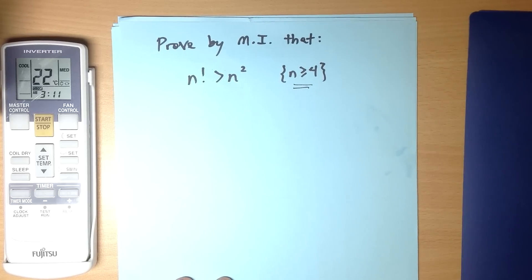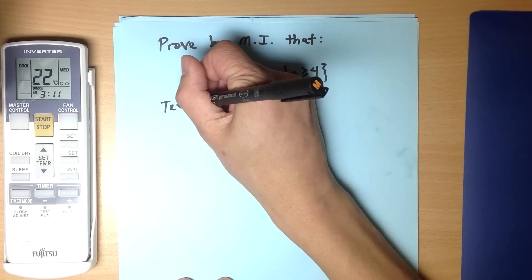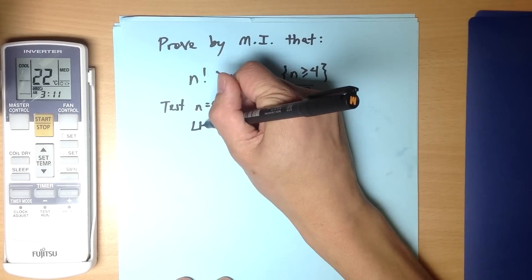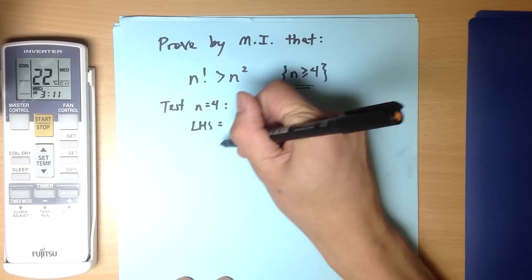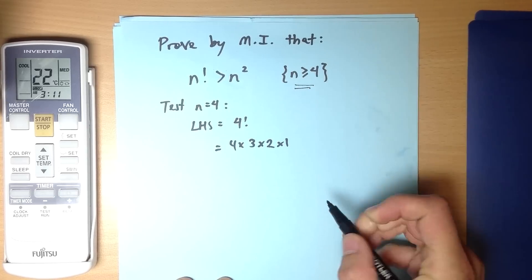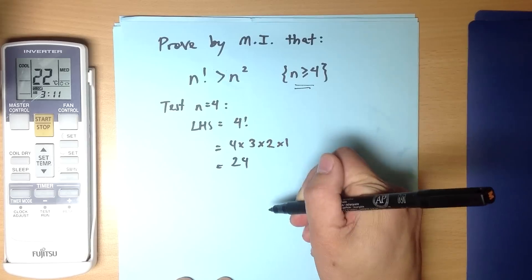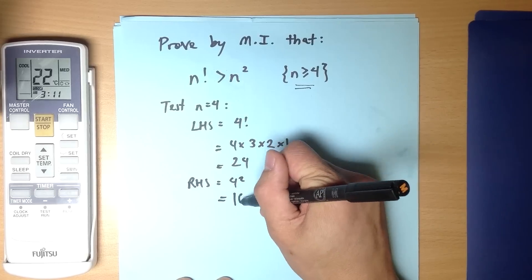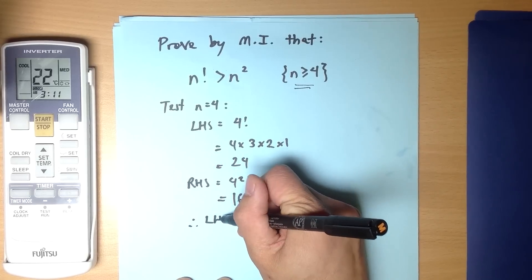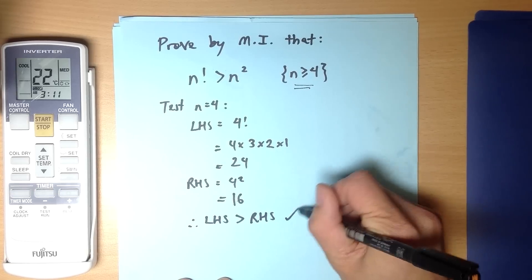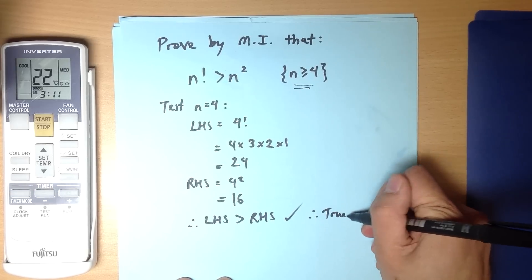So how does a proof by mathematical induction usually proceed? First, let's test that first allowable value which is n equals 4. So on my left hand side I've got 4 factorial, the definition of factorial is you multiply by all those previous integers and that gives me 24. What's my right hand side? That's 4 squared which is 16. So for this value, the left hand side is greater than the right hand side, so it's true for that value.